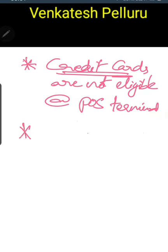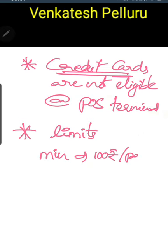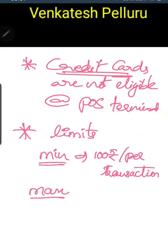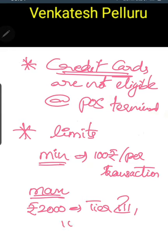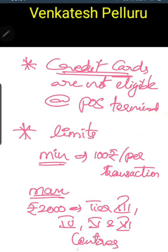The next important point is the limits of transactions at POS terminals. The minimum limit is Rs. 100 per transaction — you must withdraw at least Rs. 100 per transaction. The maximum limit varies from place to place. It is Rs. 2,000 in urban and semi-urban areas, which in banking terminology are known as Tier 3, Tier 4, Tier 5, and Tier 6 centers.